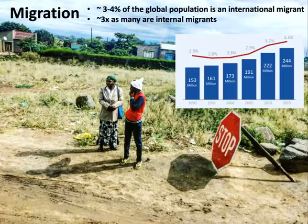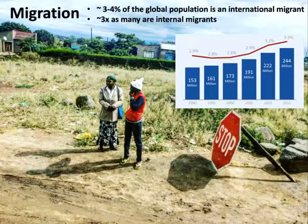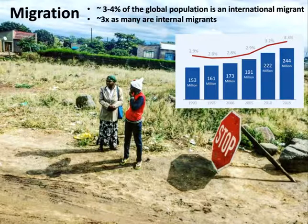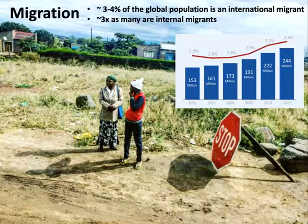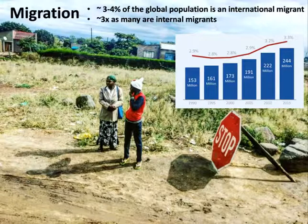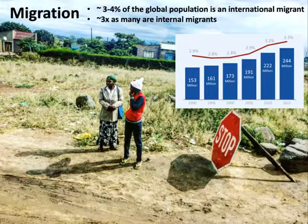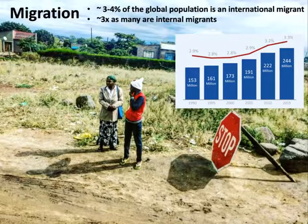What are we talking about when we say migration? It's really important to emphasize that when I refer to migration, I am referring not only to individuals who've crossed an international border — someone we would refer to as an international migrant — but also people who move within their countries of birth. There are around three times more people who move within their countries of birth than there are international migrants. We know that three to four percent of the global population is an international migrant, and this isn't distributed equally across the globe.